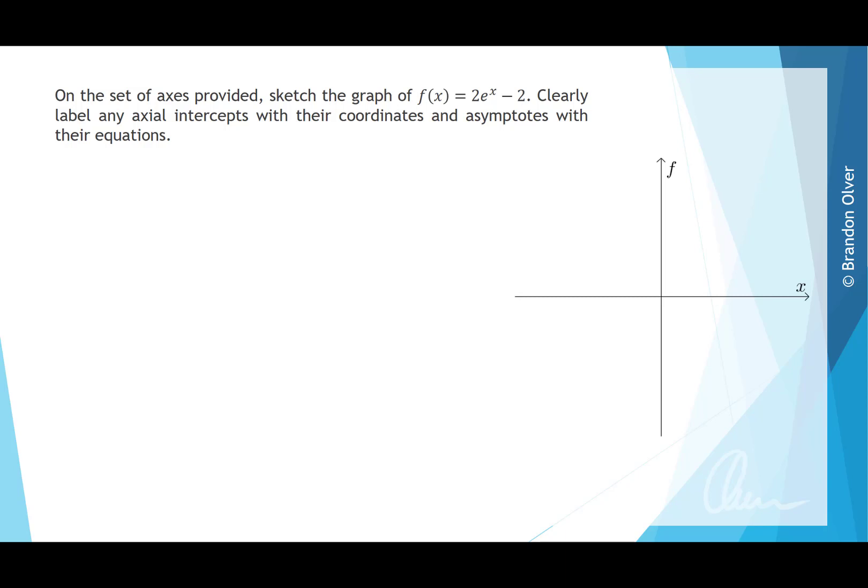So the first thing we're going to do is talk about the transformations that have happened to e^x to give the function f(x). And the first thing we're going to look at is the 2 that multiplies e^x. And that's responsible for a dilation by a factor of 2 from the x-axis.